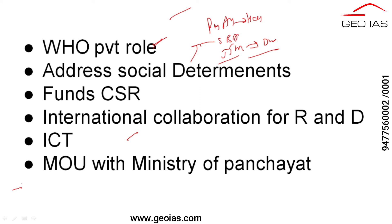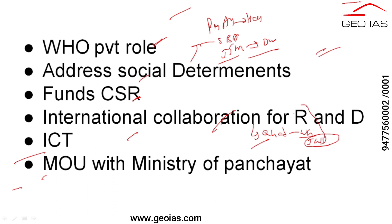We can utilize CSR - Corporate Social Responsibility - funds in dealing with TB. International collaboration is also important. There are like-minded countries we can take help from, like America, in tackling research and development. In QUAD, there is a working group called joint vaccine development. We can also initiate this for better vaccine development or better medicine production in research and development, particularly for multi-drug resistance.